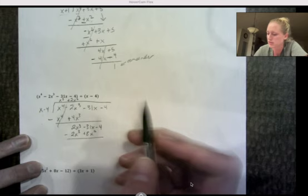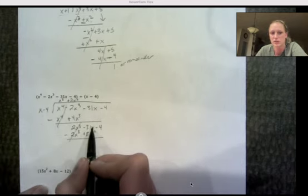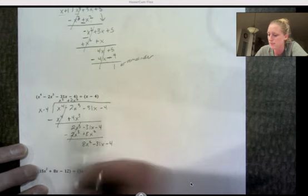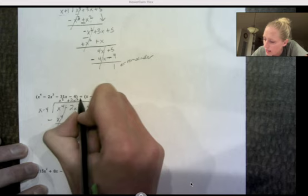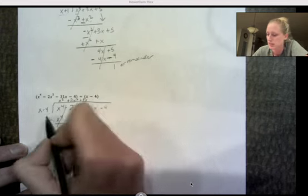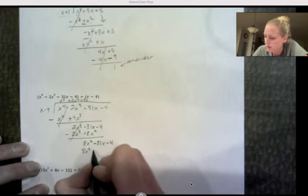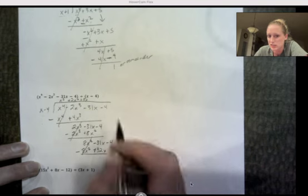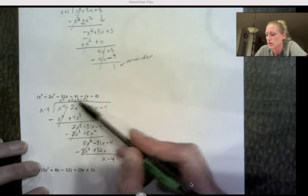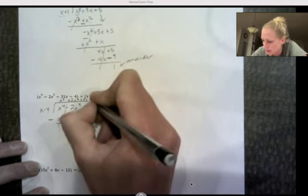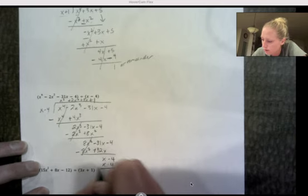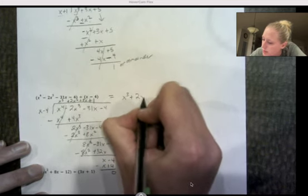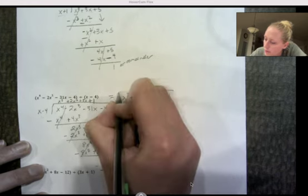Draw the line, change the signs. Notice I have 8x² and 31x — unlike terms — so write them next to each other: positive 8x², negative 31x, minus 4. x times what is 8x²? 8x. Multiply everything by 8x: 8x times x is 8x², 8x times negative 4 is negative 32x. Draw the line, change the signs. Negative 31x plus 32x is positive x minus 4. x goes into x one time. 1x times (x − 4) is x − 4. Draw the line, change the signs. Remainder is zero. The quotient is x³ + 2x² + 8x + 1 with no remainder.